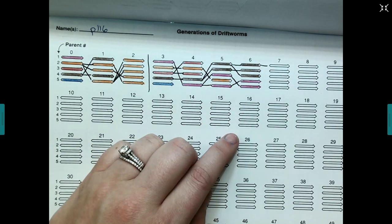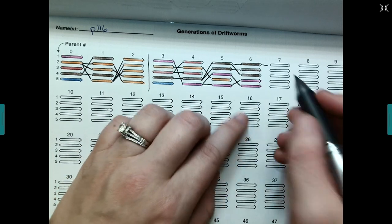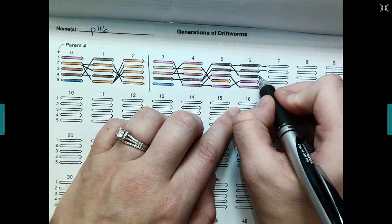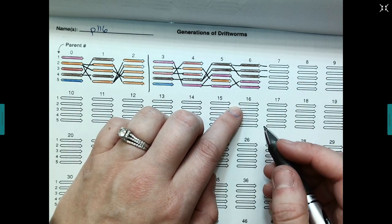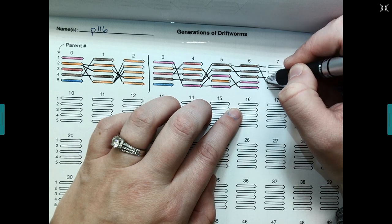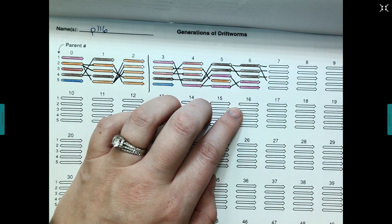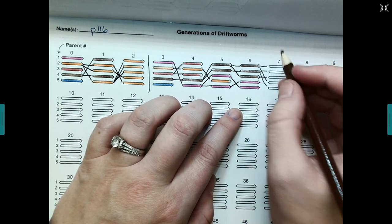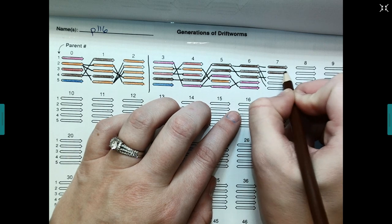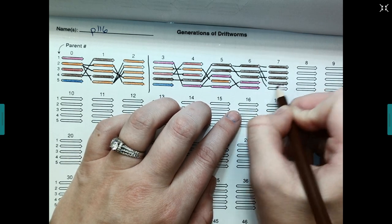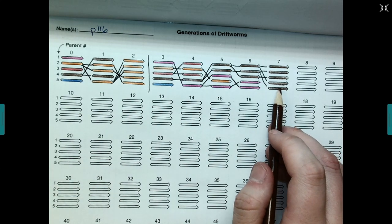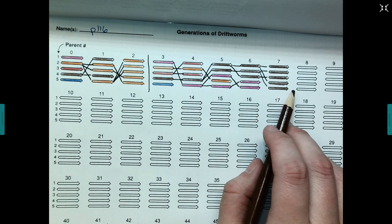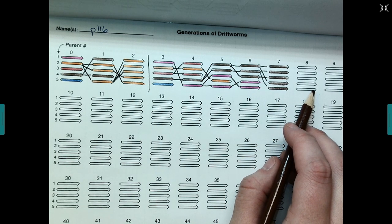So let's roll for the next generation. I rolled a one, a two, a three, a one, and a two. Brown. So all five of my drift worms are now brown. I have fixed my alleles, right? Because what we mean by that is the alleles are fixed because no matter what I roll, all the drift worms after that will always be brown.